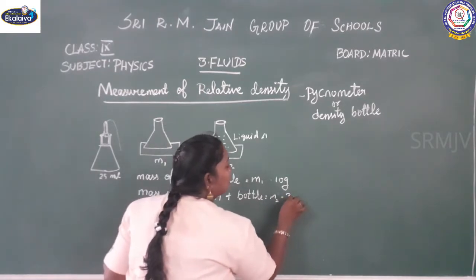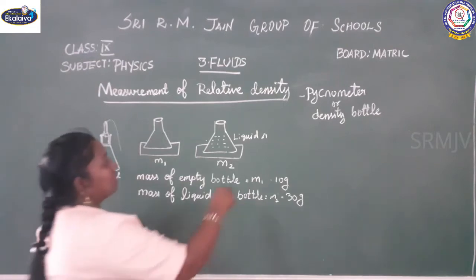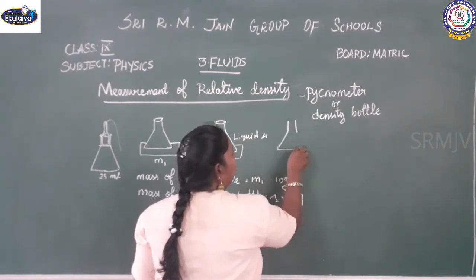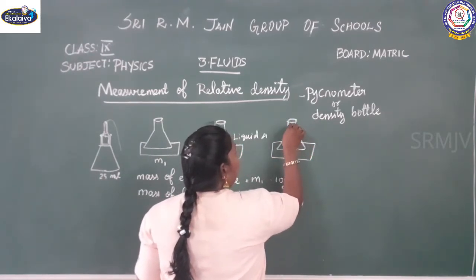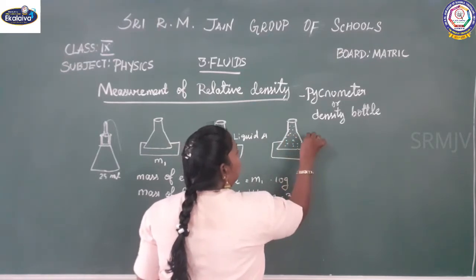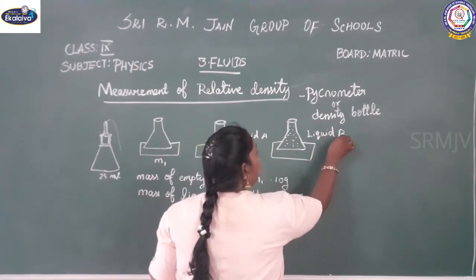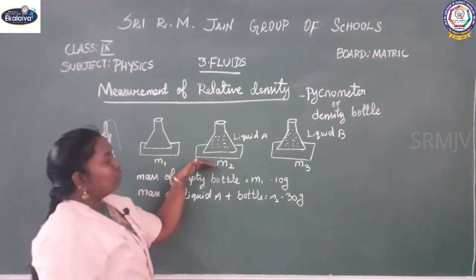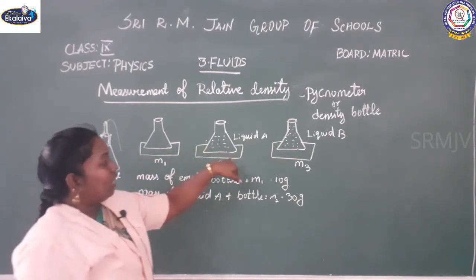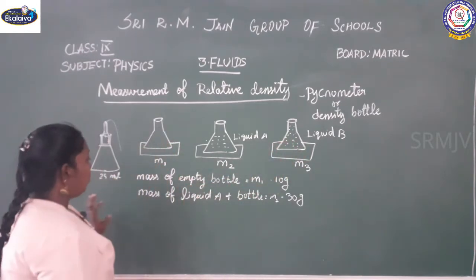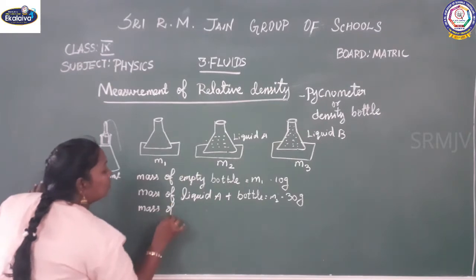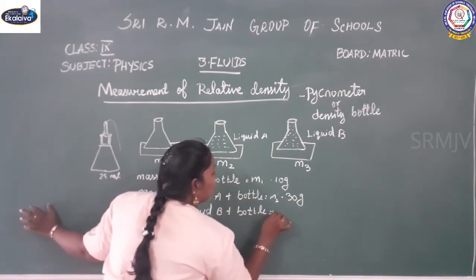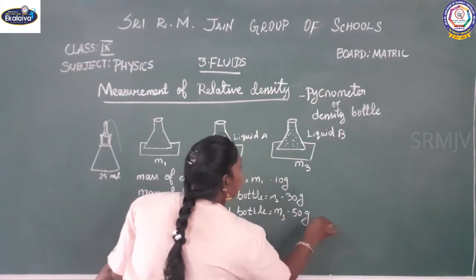I will take M2 as 30 grams. Now remove liquid A and fill the bottle with liquid B, then weigh it again. This gives you M3, which is the mass of liquid B with the bottle. So M1 is the empty bottle, M2 is the mass of liquid A with the bottle, and M3 is mass of liquid B with the bottle. I am taking M3 as 50 grams.